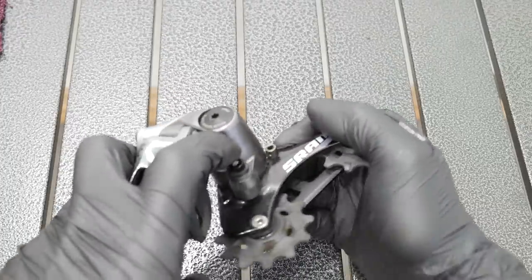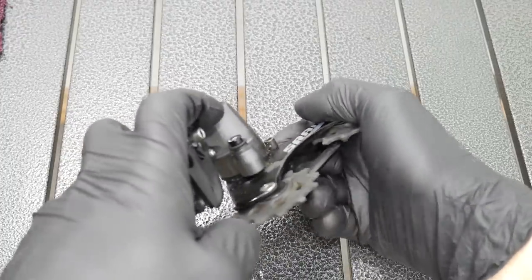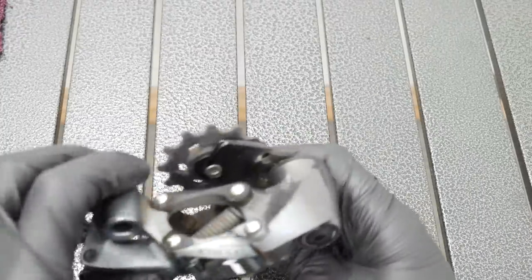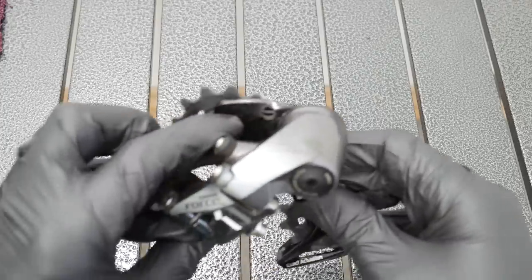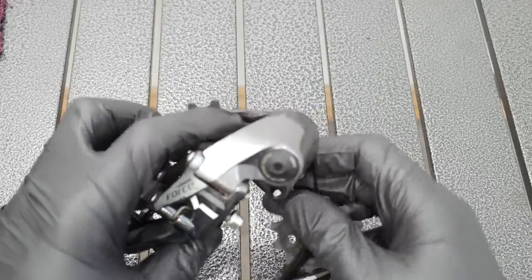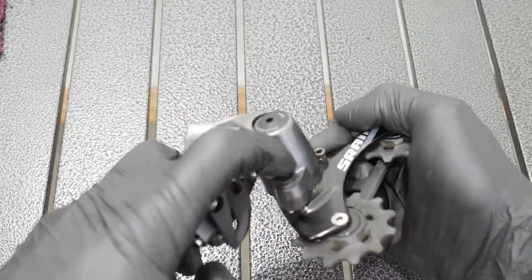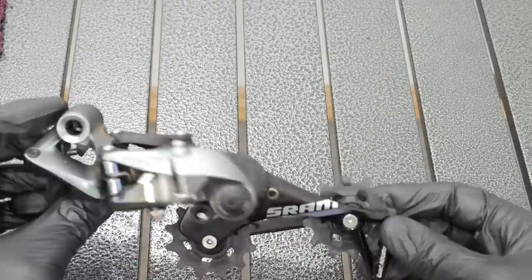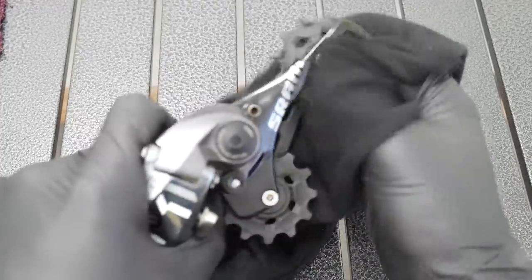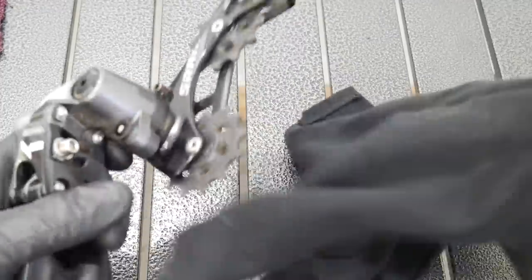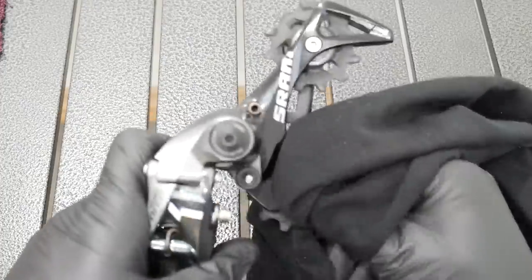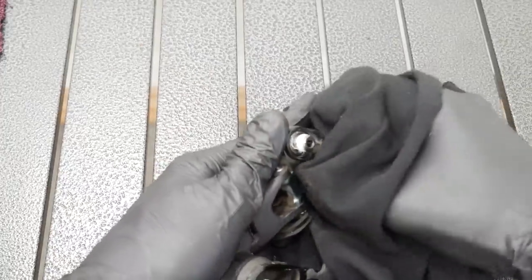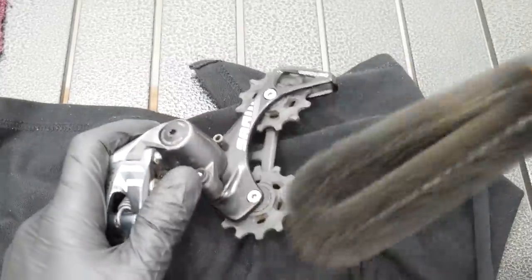If you remember a couple of weeks ago I made for you the SRAM Apex 1 by 11 drivetrain, the 1 by 11 system rear derailleur. The Apex was not very good for wet conditions and cyclocross conditions. I didn't like it.